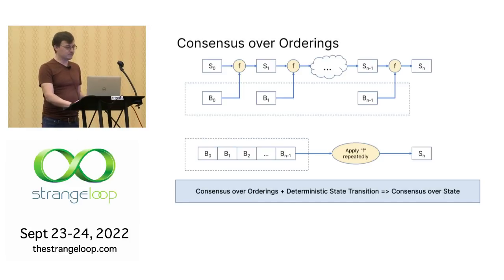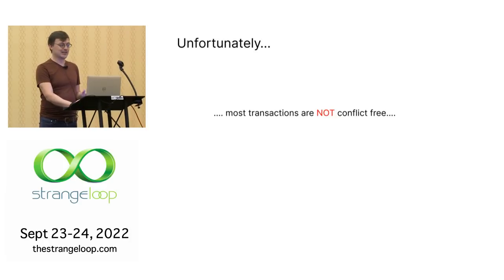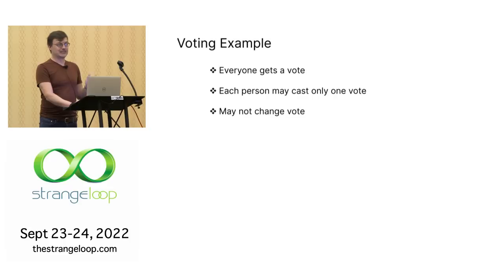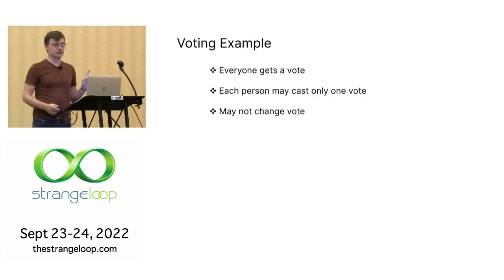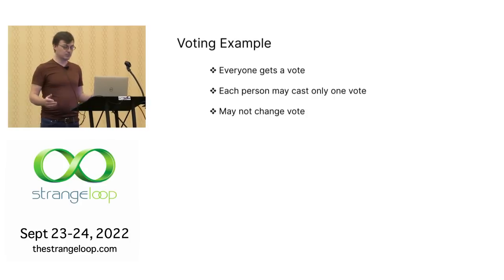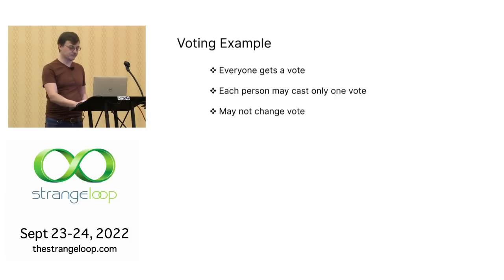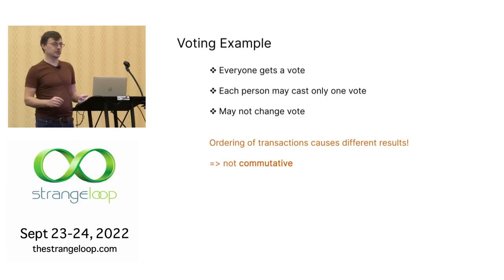We want consensus over the state of the computer after an agreed set of blocks has been processed. Unfortunately, most transactions are not going to be conflict-free, and this causes a problem. Let's take a voting system as an example: everyone gets a vote, each person may cast only one vote, and once they've voted, they can't change it. The problem is the ordering of transactions causes different results.